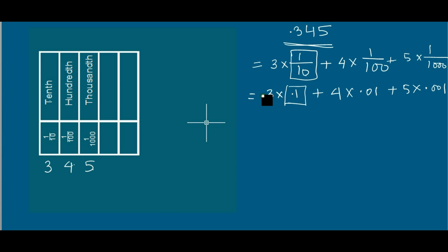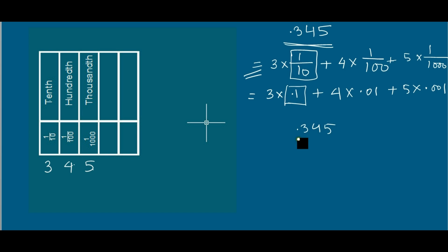But when you are asked to expand this number, just follow this method. If anybody asks you to read the number 0.345, you will read it as 0.345 and not 345, because after the decimal it is read like this: 0.345.